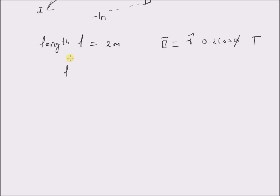The vector corresponding to the length of the wire is equal to z cap 2 because the length of the wire is 2 meters and the wire is parallel to the z-axis. The current is given as 5 amperes.